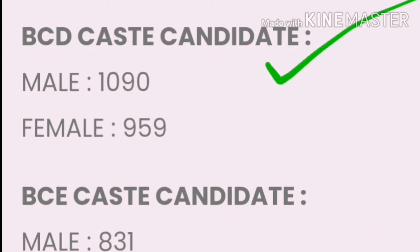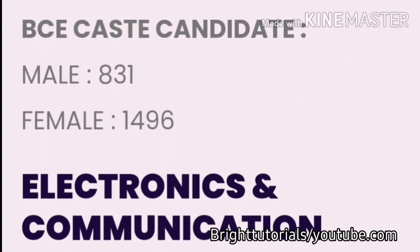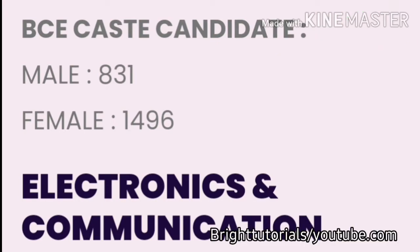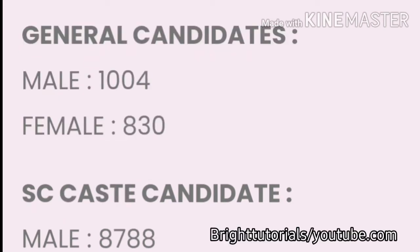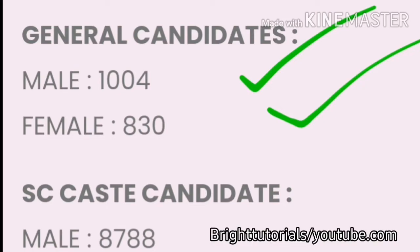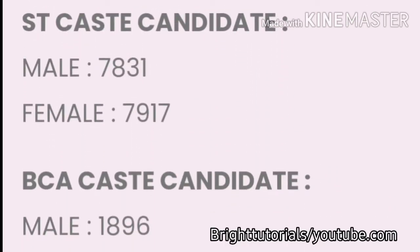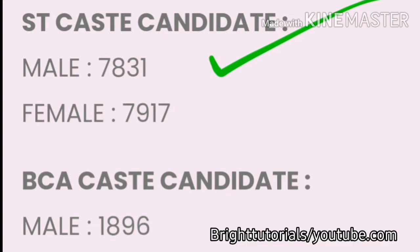For BCD caste in CSE: male cutoff is 1090 and female cutoff is 959. For BCE caste: male cutoff is 831 and female cutoff is 1496. For SC caste students: male cutoff is 888 and female cutoff is 6388. For ST caste: male cutoff is 7831 and female cutoff is 7917.